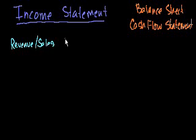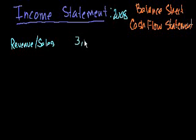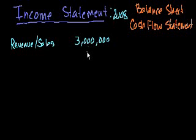Let's say the revenue or the sales in a given period — let's say this is the income statement for 2008 — we sold $3 million worth of widgets. A lot of times when you look at income statements on Yahoo Finance, instead of writing $3 million, you'll see $3,000 there. That's because the standard is to write things in thousands. So $3,000 would be $3,000,000, which would be $3 million. And for really big companies, they actually sometimes write their numbers in millions, so $3,000 would mean $3 billion.